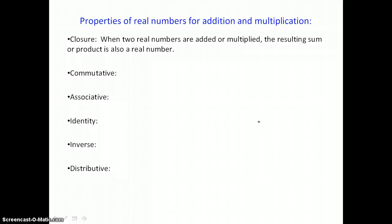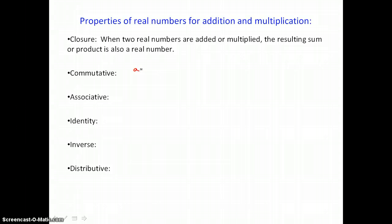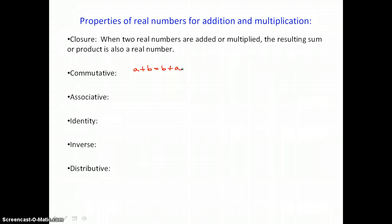Next we'll look at properties of real numbers for addition and multiplication. The closure property states that when two real numbers are added or multiplied, the resulting sum or product is also a real number. The commutative property says we can add A and B in any order: A plus B equals B plus A. The commutative property also holds for multiplication: A times B equals B times A.